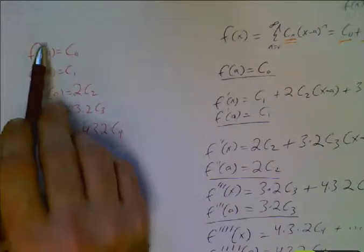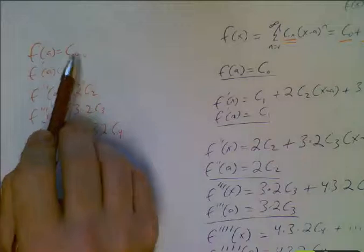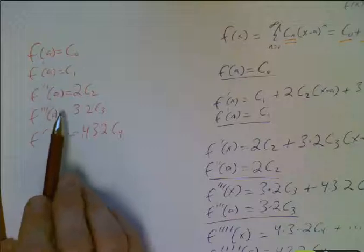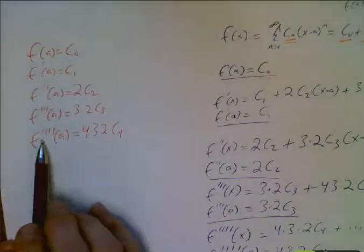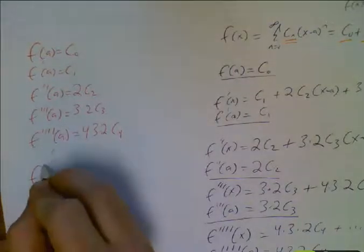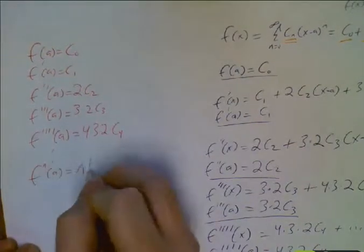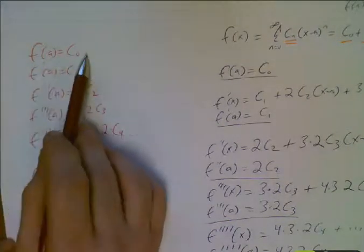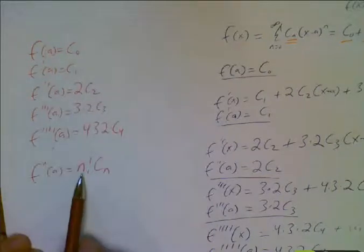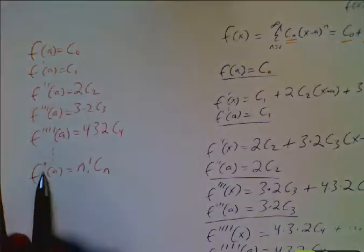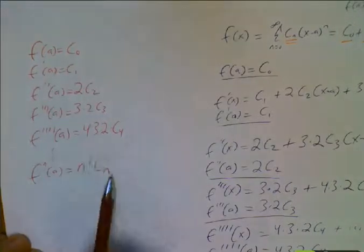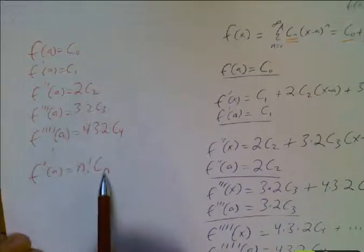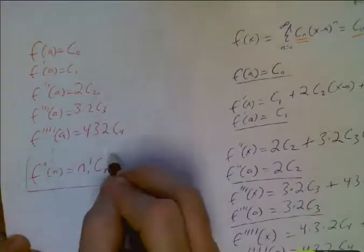Okay, so there's the summary of all the ones we came up with. So my zeroth derivative, my original, was just c sub zero. My first derivative was c one. My second derivative was two factorial c two. Third derivative was three factorial c three. My fourth derivative was four factorial c four, which means my nth derivative is going to be n factorial c sub n. This is my relationship.